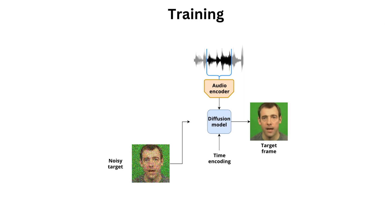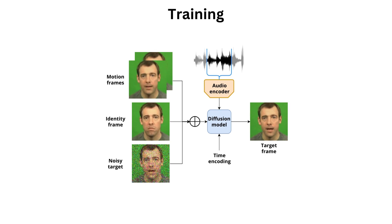Additionally, we provide the model with an audio embedding of a corresponding speech fragment. To do that, we use a pre-trained audio encoder. To preserve the identity, we add an identity frame — a frame sampled from the same video clip. To inject information about the current motion, we add frames preceding the target frame, called motion frames. Both the identity frame and motion frames are concatenated channel-wise with the noisy target and passed to the model.